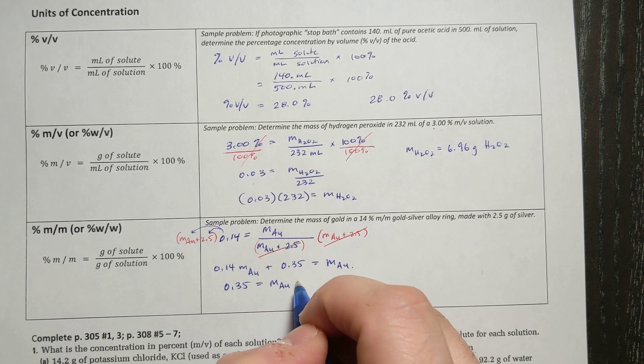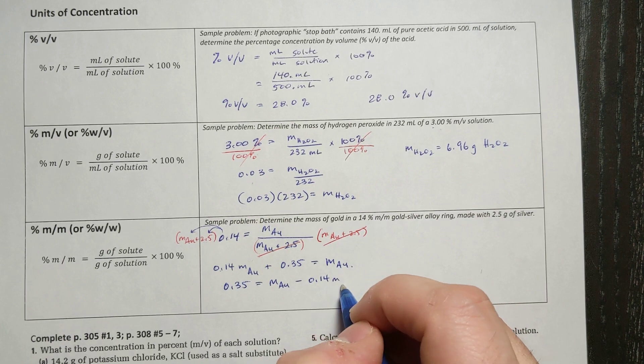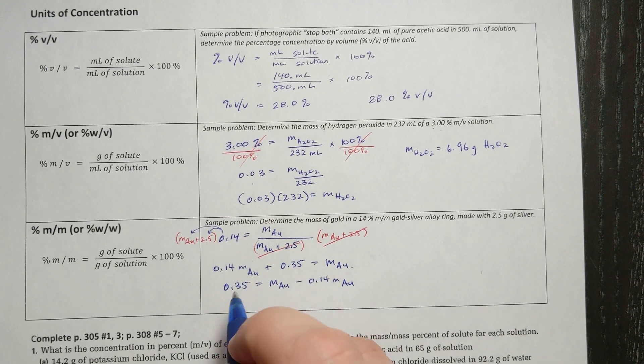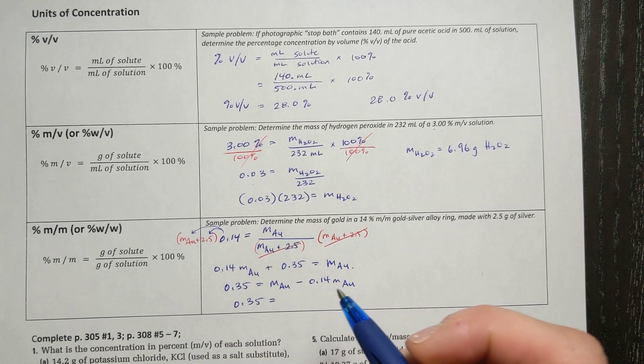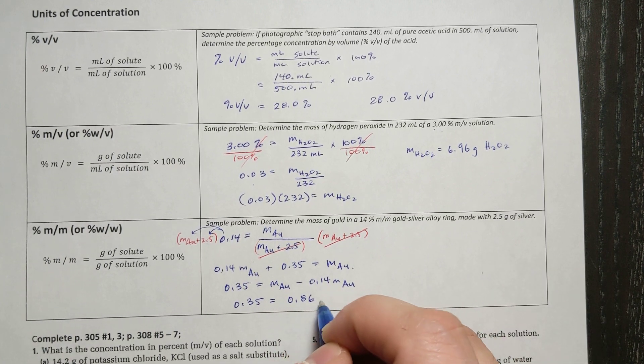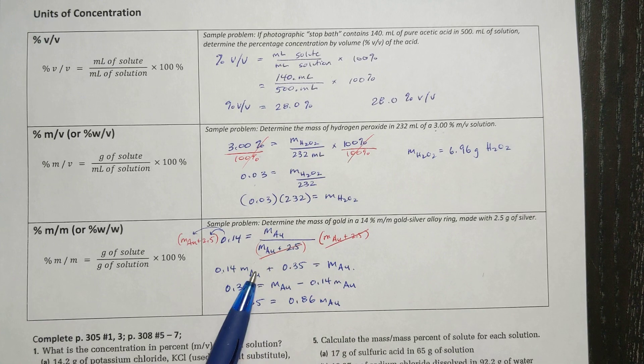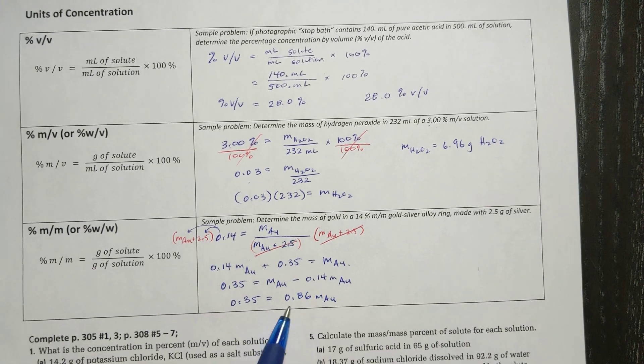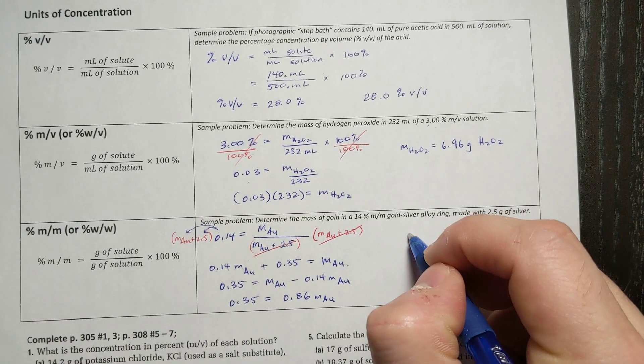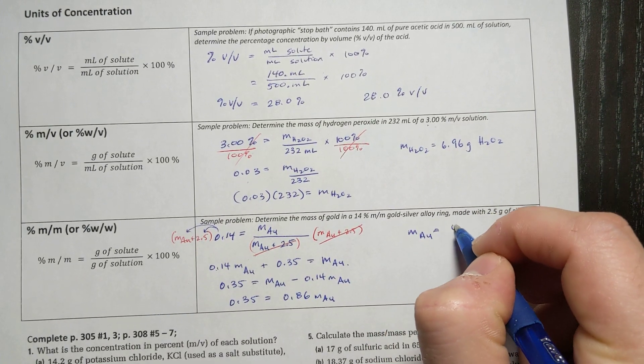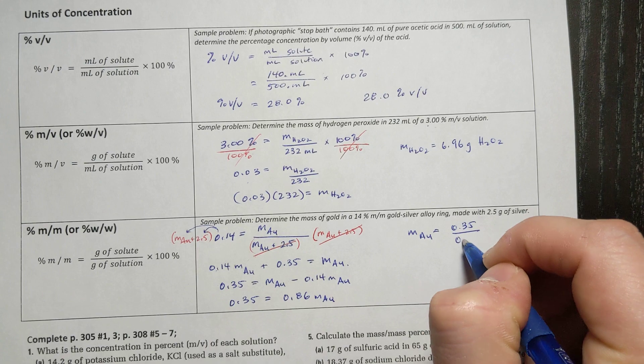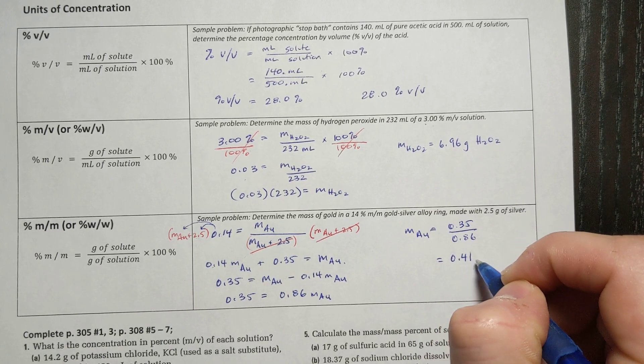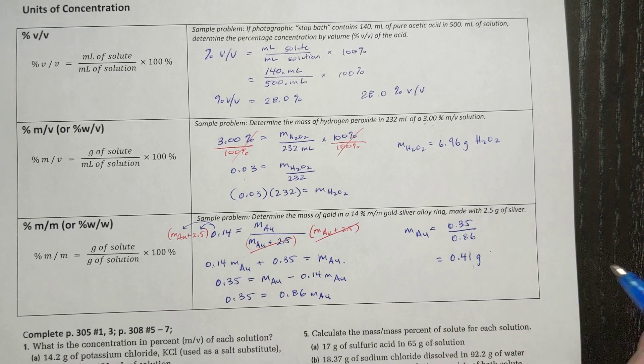I'm going to subtract this from both sides to bring this over to this side. So 0.35 is equal to the mass of gold minus 0.14 mass of gold. And there's like a 1 there. So 1 of these minus 0.14 of these. 0.35 is equal to 0.86 mass of gold, because there's a coefficient of 1 there. So there's 1 mass of gold minus 0.14 mass of gold is equal to 0.86 mass of gold. So therefore, to find the mass of gold, I do 0.35 divided by 0.86. And so the mass of gold in that ring was 0.41 grams of gold.